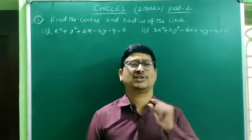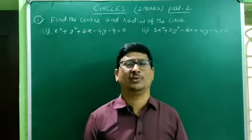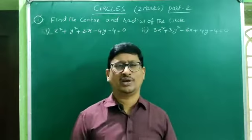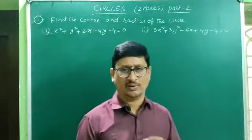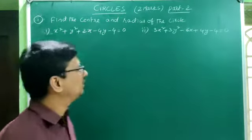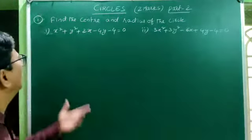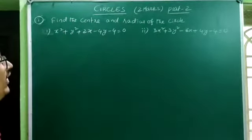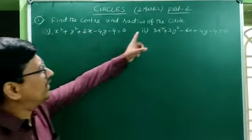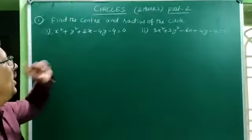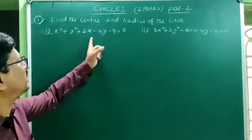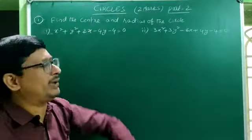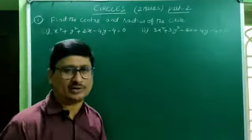Whenever a circle equation is given, we can find the radius and center. Let's go to the first problem: find the center and radius of the circle. First problem: x² + y² + 2x − 4y − 4 = 0.